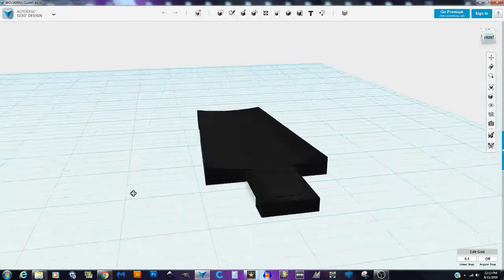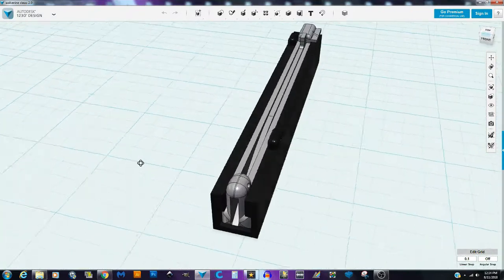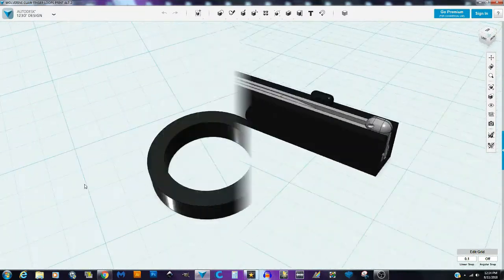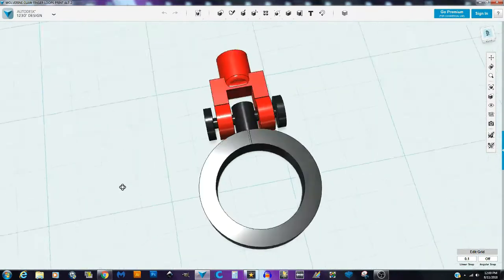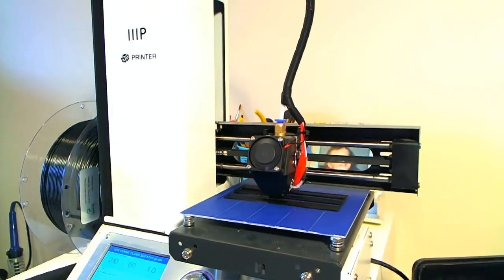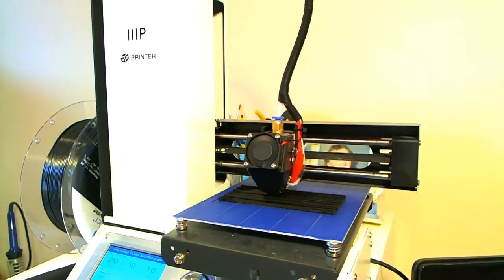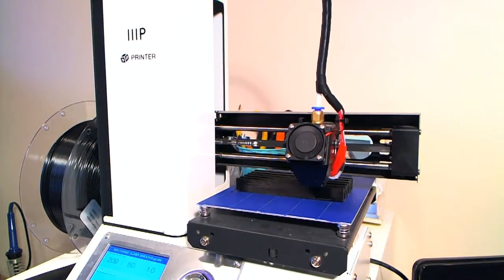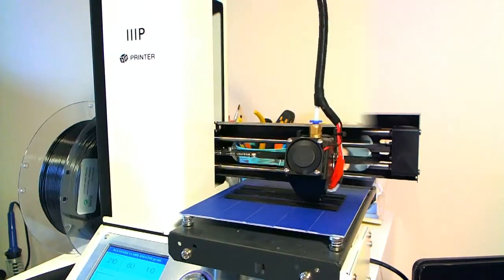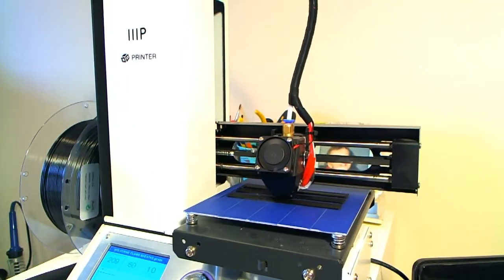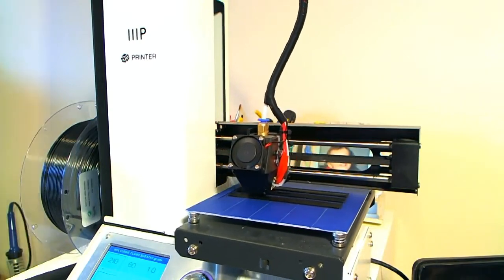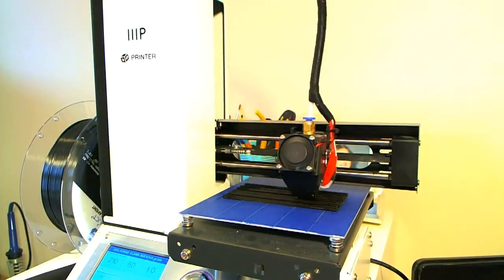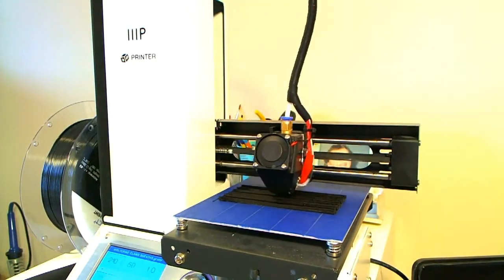I started out by modeling everything on an open source free software called 123D Design. I did all of the rings, the base, the claws, the sheaths, everything. And then I uploaded the STL files to my Monoprice Mini Select 3D Printer and printed all of those out.